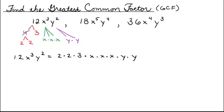Now let's factor our next term. Two numbers that give me 18 are 2 times 9, and two numbers that give me 9 are 3 times 3. I'll cross out the 9 because it's been factored out. Now I'll factor out x to the fifth — that consists of five factors of x.